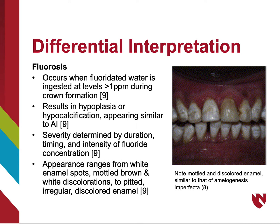Fluorosis occurs when fluoridated water is ingested at levels above one part per million during crown formation. This results in hypoplasia or hypocalcification appearing similar to AI. The severity is determined by duration, timing, and intensity of fluoride concentration. The appearance ranges from white enamel spots, mottled brown and white discolorations, to pitted irregular discolored enamel. To differentiate fluorosis from AI, it is important to note that fluorosis is caused by environmental factors and AI is caused by genetic factors.